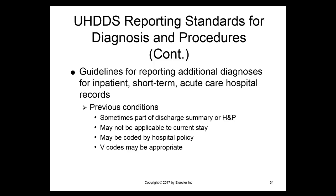Sometimes patients have previous conditions that are documented — sometimes they're part of a discharge summary or the history and physical — but they might not be applicable to that patient's current stay in the hospital. The hospital may have a policy that requires that they be coded, and there may be an appropriate V-code. V-codes are a classification of codes for conditions that affect the patient's status but are not current conditions. For instance, if a patient had cancer in the past but doesn't currently have it, we can't code cancer. However, there is a personal history of cancer code — a V-code that begins with a V — that we can apply.